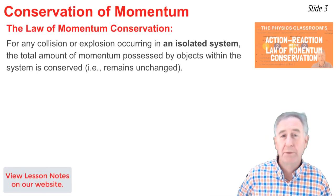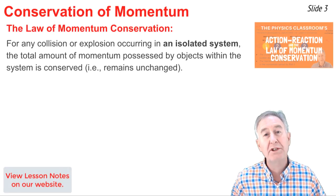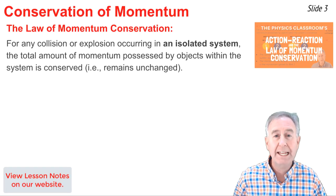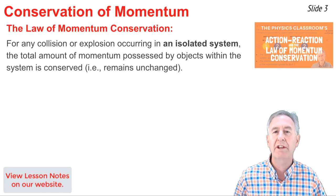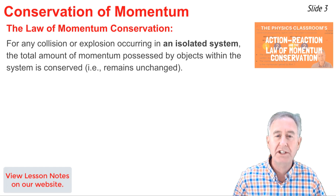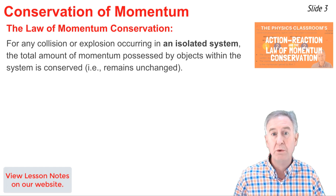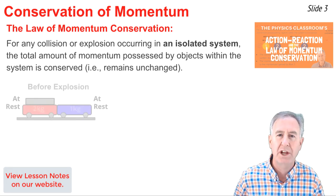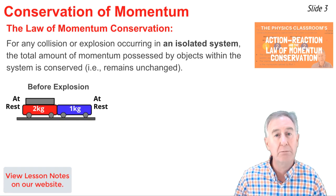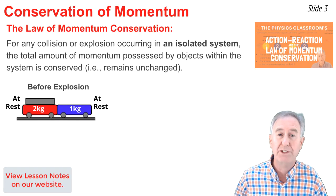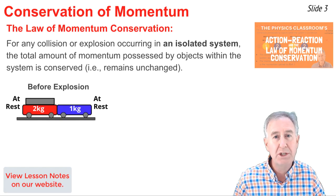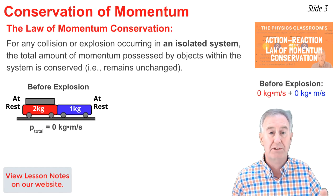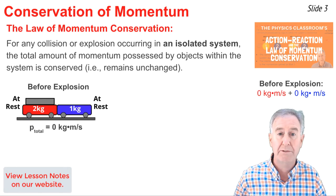In a previous video, I discussed the law of momentum conservation, which states that for any collision or explosion occurring within an isolated system, the total momentum of the two objects would be conserved, or would remain unchanged. Here we have a picture of a red cart and a blue cart at rest on a track. Since each individual object has zero momentum, the system has a total momentum of zero.